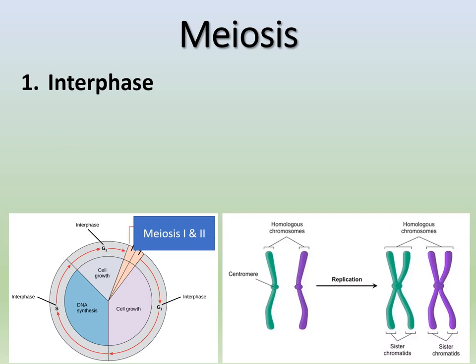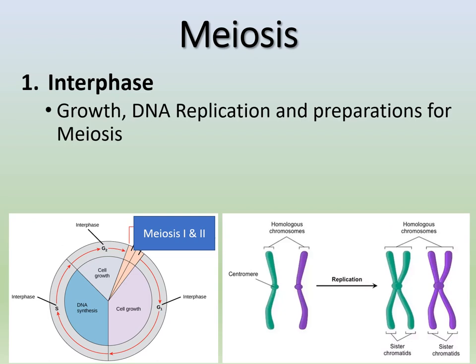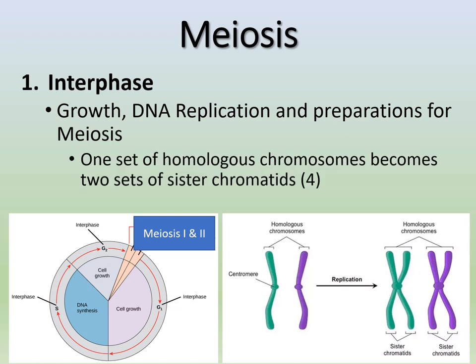During interphase we do cell growth, replicate our DNA, and prepare for meiosis instead of mitosis. Essentially, we're replacing mitosis in the cell cycle with meiosis I and II — our two divisions. One set of homologous chromosomes becomes two sets of sister chromatids. This is the same DNA synthesis process, same interphase, same checkpoints — all of that from mitosis — except now these cells will undergo two rounds of division.